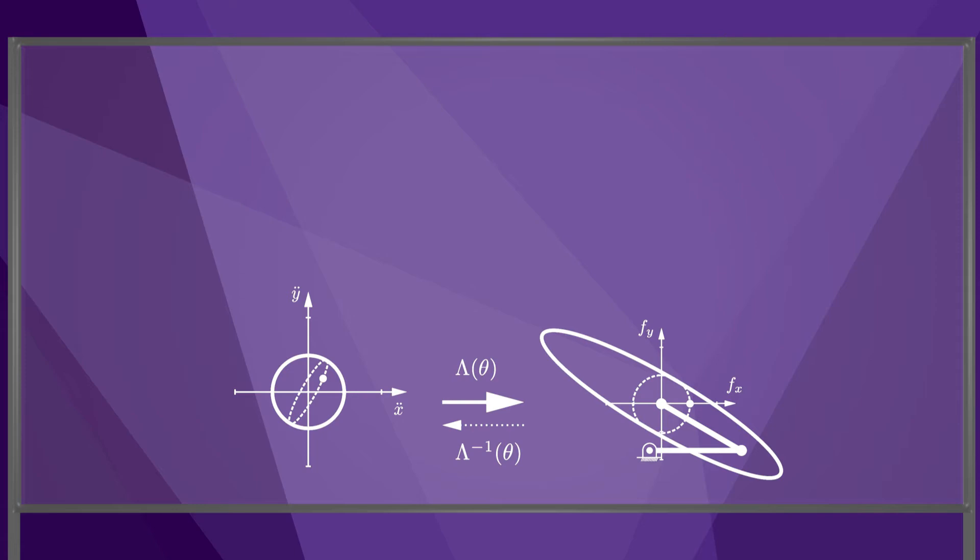For an endpoint force purely in the x direction, as indicated by the dot on the circle of forces, we get an end effector acceleration that has both x and y components, as indicated by the dot on the ellipsoid of accelerations.